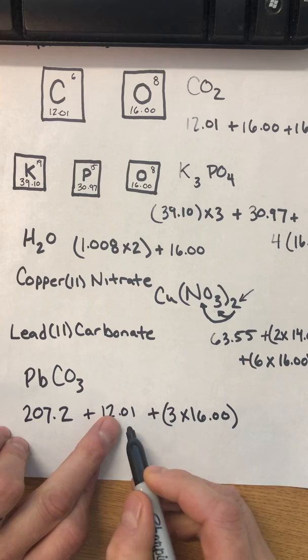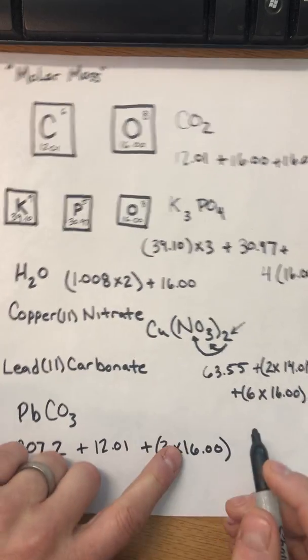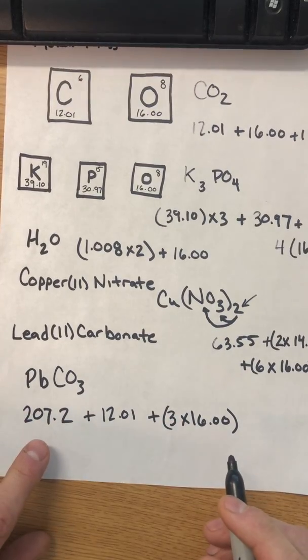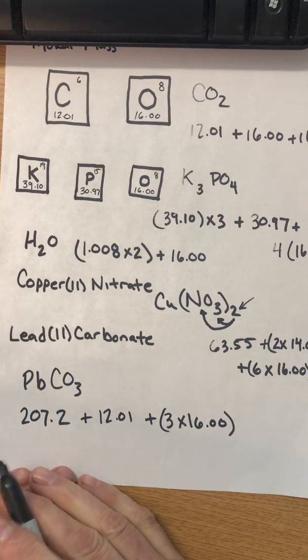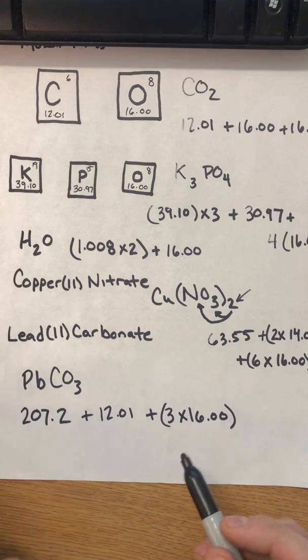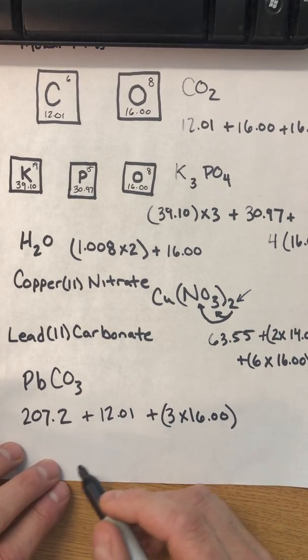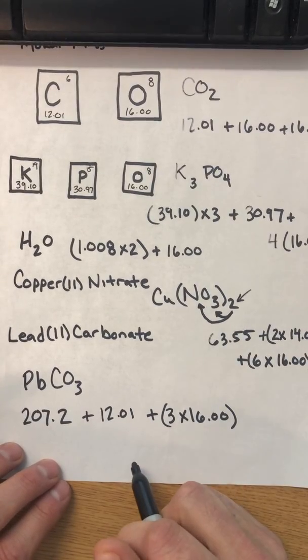So you can see that our carbon is two decimal places, our oxygen is two decimal places, and our lead is only one decimal place. That means that when you add this up and your calculator spits out an answer, you've got to round the decimal to just one decimal place.